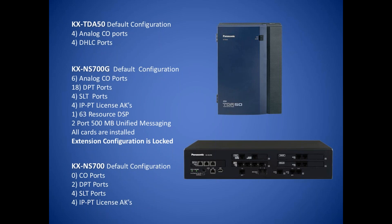The NS700G, like most systems, comes minimally configured, allowing you to order cards to fit your end users' needs. It's important to understand that the NS700G comes configured with six analog CO ports, 18 digital proprietary telephone ports, four single-line telephone ports, four IP proprietary telephone license activation keys, one 63-resource digital signal processor, and a two-channel 500-mailbox unified messaging system.